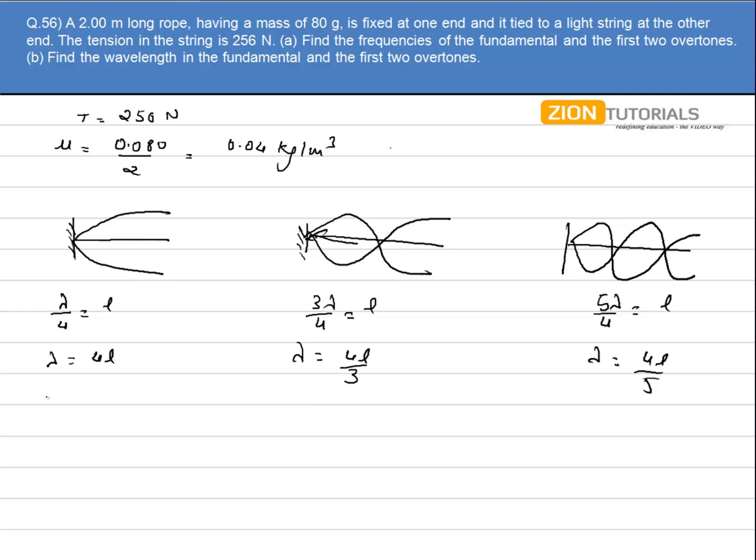Now the total length is given as 2 meter. So substituting it, lambda comes out to be 8 meter. Here it will be 8 by 3 meter. Here it will be 8 by 5 meter.